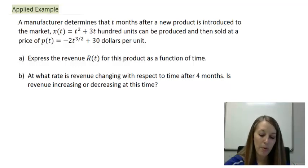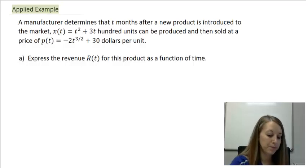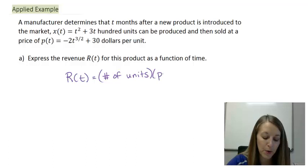Okay, so let's look at part A first. We want to express the revenue for this product as a function of time. Now revenue is the amount of money that we're bringing in. We want to figure that out by taking the number of units, however many units we're selling, times the price per unit.